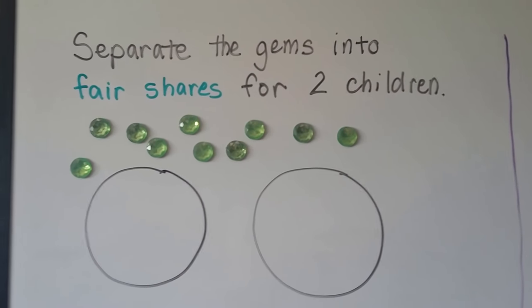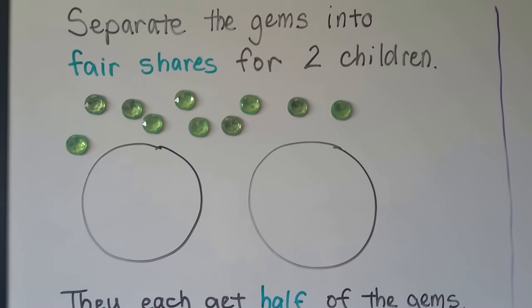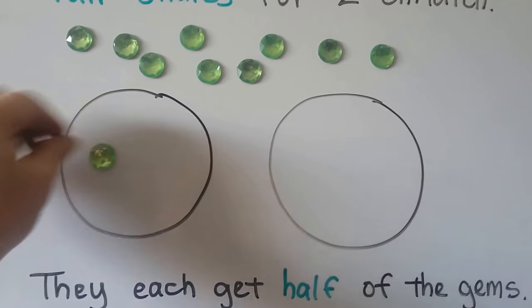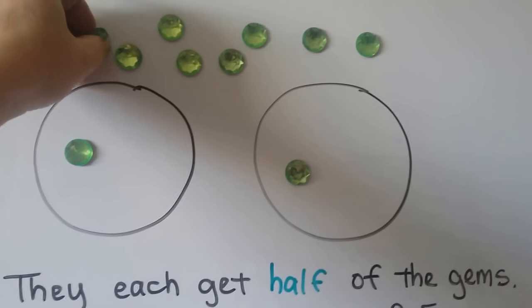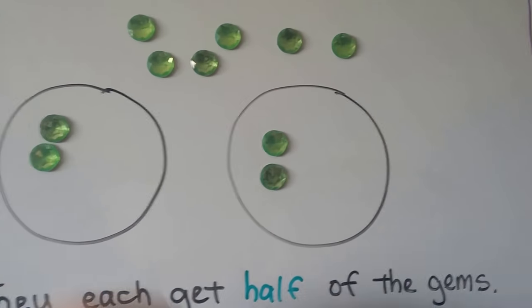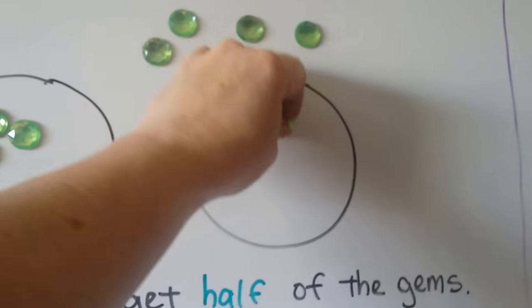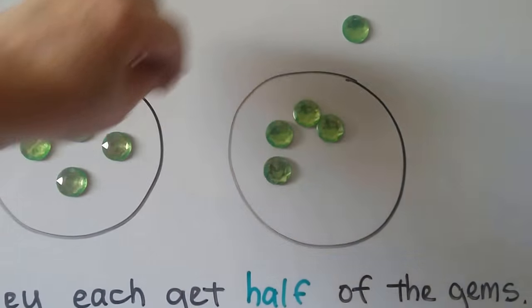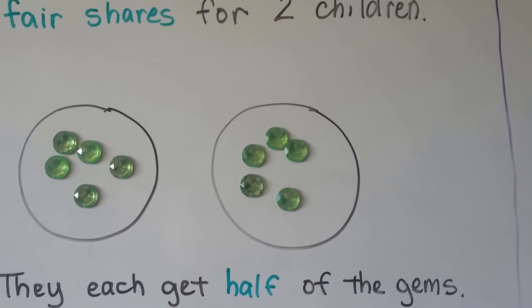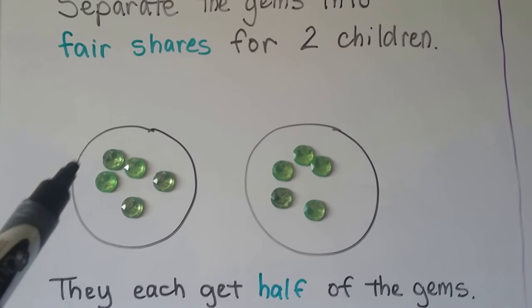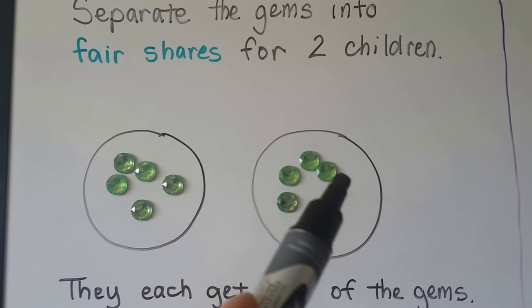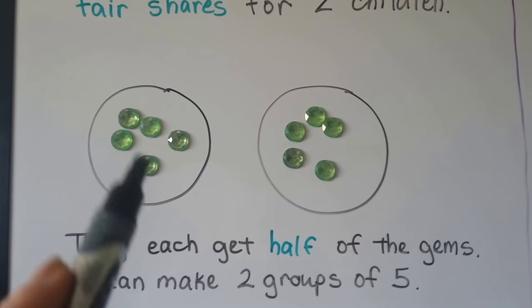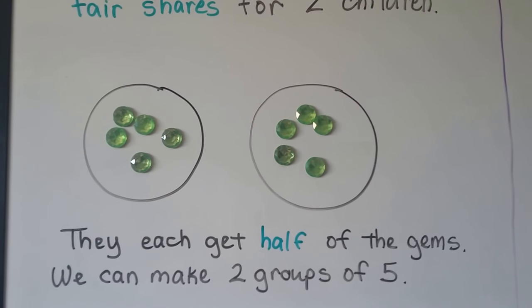Separate the gems into fair shares for two children. Here we've got some green gems and we need to separate them for two children. We can go one for this child, and one for that child, and go back and forth until they're all gone. This group has five and this group has five — so yes, we made fair shares. They each get half of the gems. There were ten gems total — we made two groups of five.